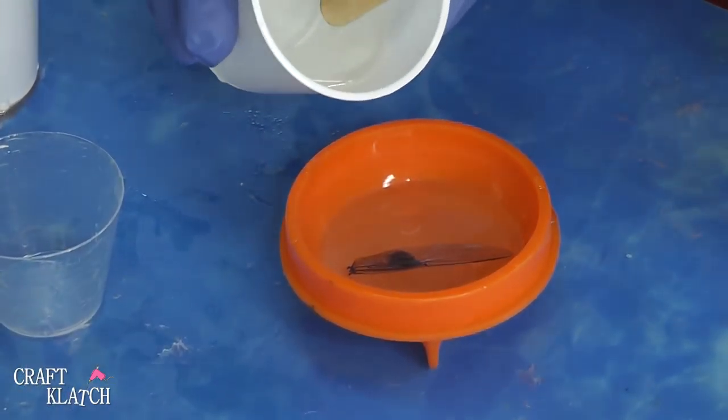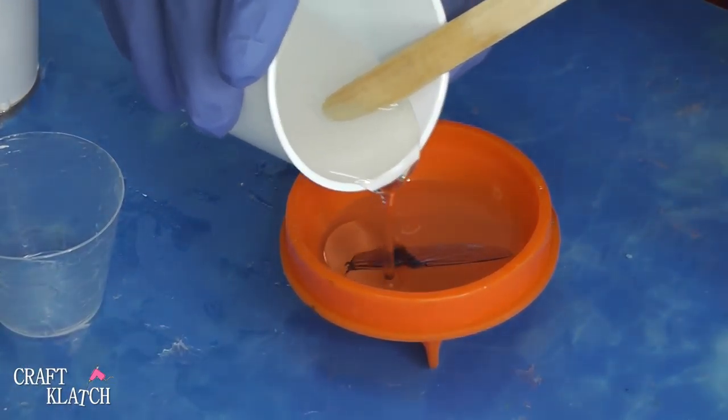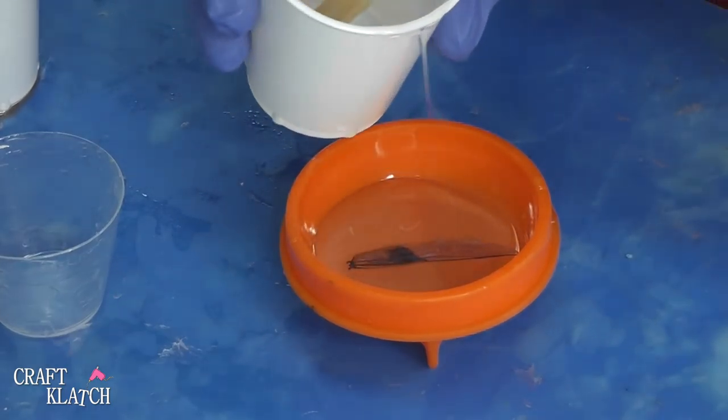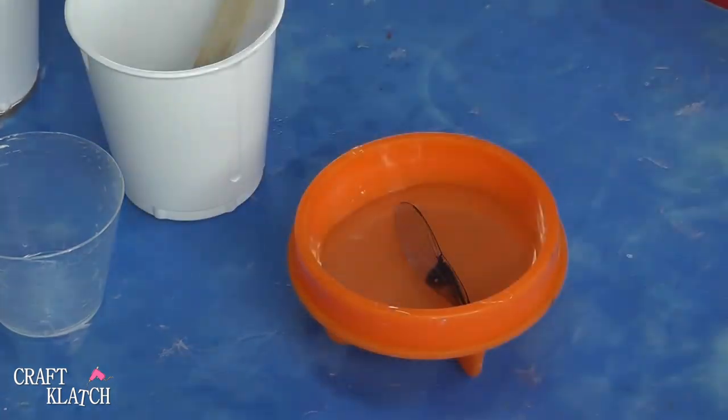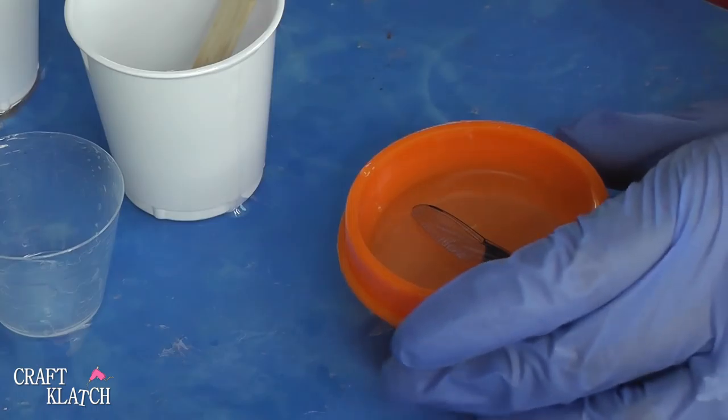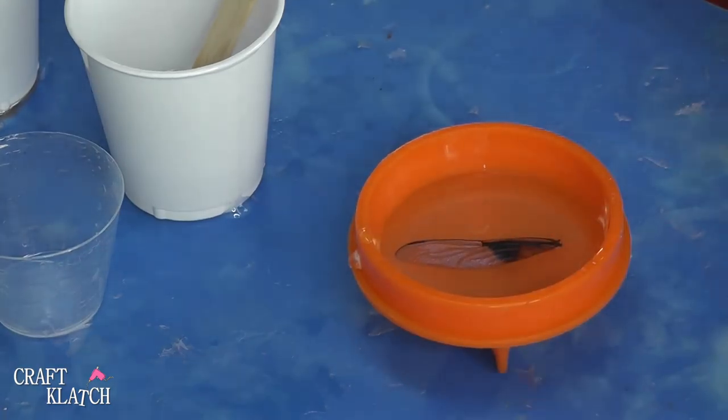I have a little more Easy Cast mixed, and I'm going to pour just a very thin layer, just to make sure the whole thing is embedded, because remember, it floated just a little bit. Then I'll hit it with my lighter and just set it aside. All we need to do now is let that set a little bit, and we can do our background color.